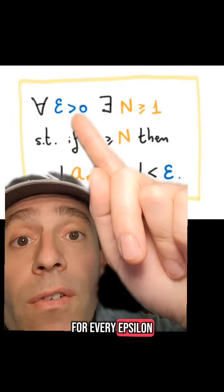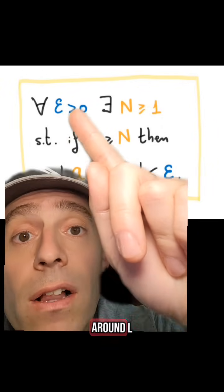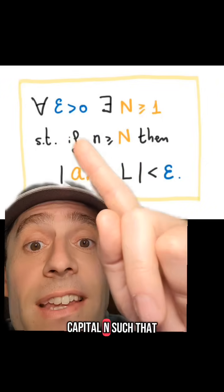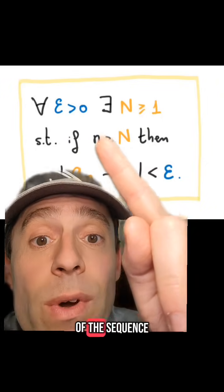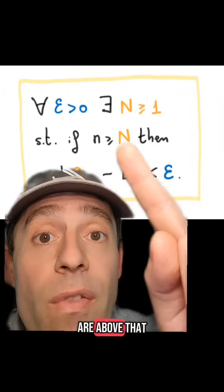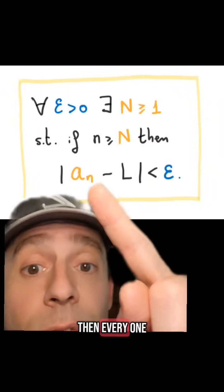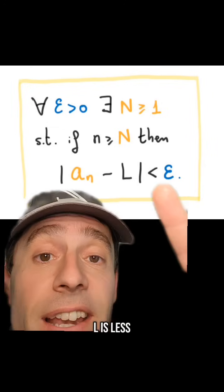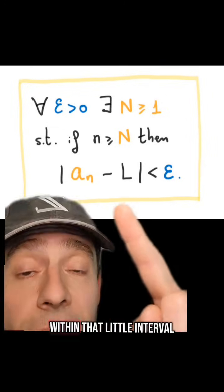For every epsilon, for every radius around L of a little interval around L, there is some capital N such that if the elements of the sequence are above that capital N, then every one of those elements—the distance to L—is less than epsilon. So it is within that little interval.